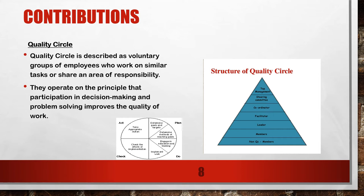Quality Circle is described as voluntary groups of employees who work on similar tasks or share an area of responsibility. They operate on the principle that employee participation in decision-making and problem-solving improves the quality of work. The structure of Quality Circle includes top management, steering committee, coordinator, facilitator, leader, members, and non-quality control members.